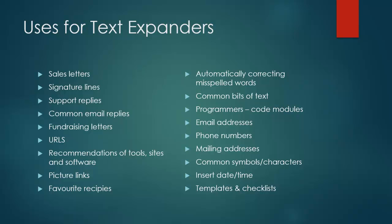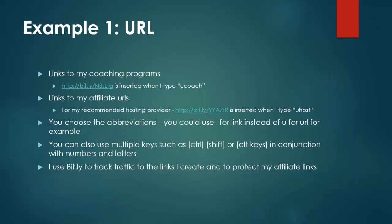Let's look at a few examples. The first example is using a text expander to insert a URL or a website address. I have a tracking link set up to go to my coaching services. So whenever I want to send someone a link to my coaching service, I just type 'ucoach' — that's it — and it automatically inserts the URL. For the hosting company I use, I have my affiliate link preset as a tracking link. I just type 'uhost' and it automatically inserts that. You choose the abbreviation — I could use L for link or W instead of U; this is just what I've chosen.